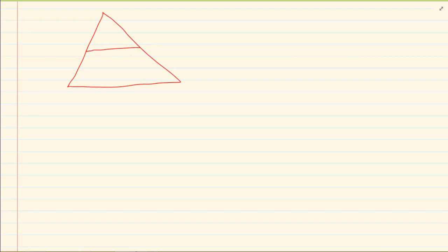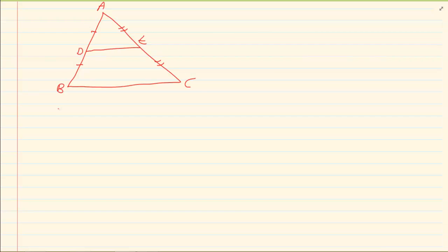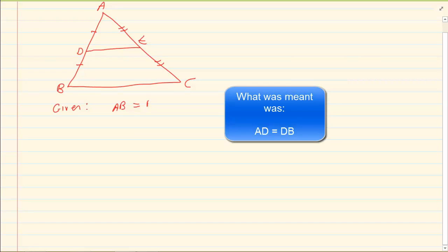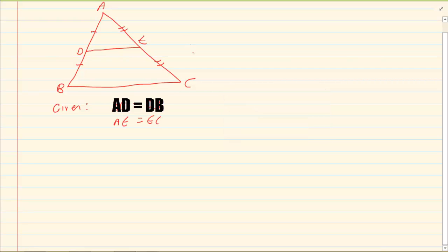The first one was where you were given a triangle and it was given that the triangle was cut by its midpoints. So what is given is that the opposite sides are cut in half. So I have AB is equal to DB and then I have that AE is equal to EC.